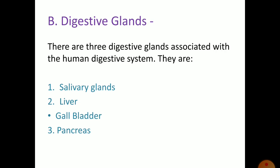Digestive glands: there are three digestive glands associated with the human digestive system. They are: first, salivary glands; second, liver; and third, pancreas. There is also another small organ associated with the liver, known as the gallbladder.